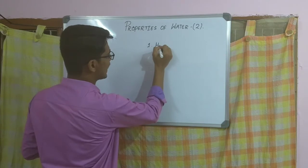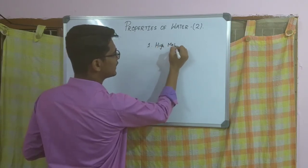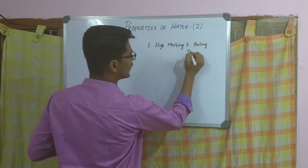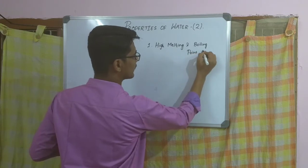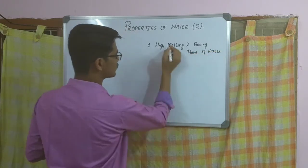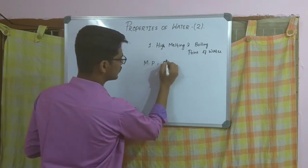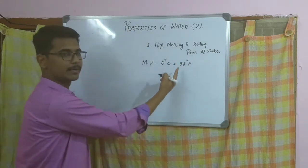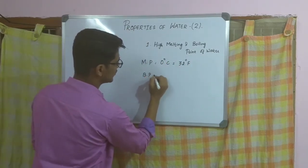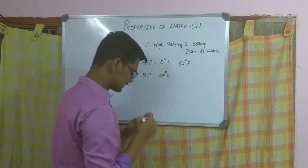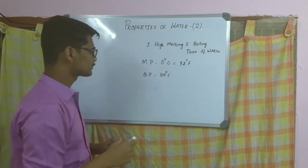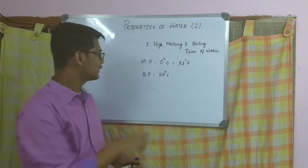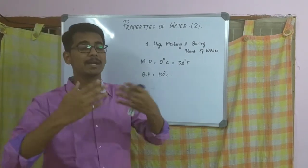The next property is the high melting and boiling point of water. We know the melting and boiling point of water. The melting point is around 0 degree Celsius, which we can write as 32 degree Fahrenheit. The boiling point is around 100 degree Celsius. Now, why are we calling this a high melting and high boiling point? First, let us consider the melting point. We say the high melting point of water.